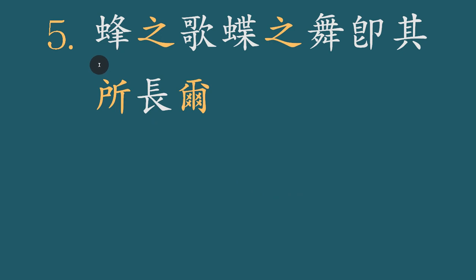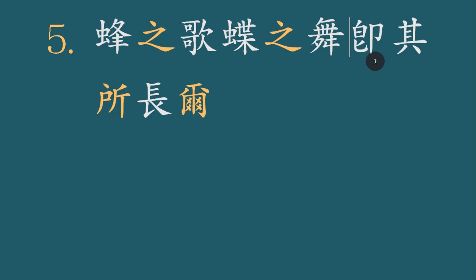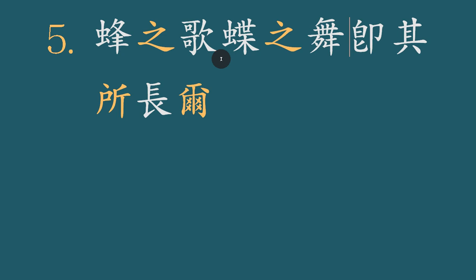5번 보시겠습니다. 봉지가 접지무는 즉 기소장이. 토를 대면 봉지가와 접지무는 즉 기소장이라. 봉지가는 벌봉자, 접은 나비접자지요. 벌이 노래하고 나비가 춤을 추는 것은, 곧 즉자니까, 곧 그 소장이, 장은 장점, 장점인 바일 뿐이다.